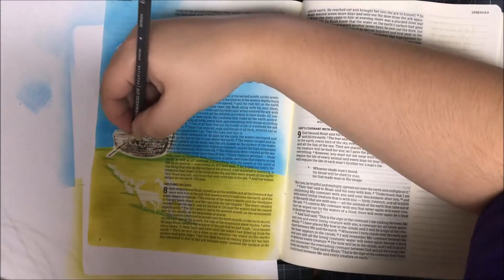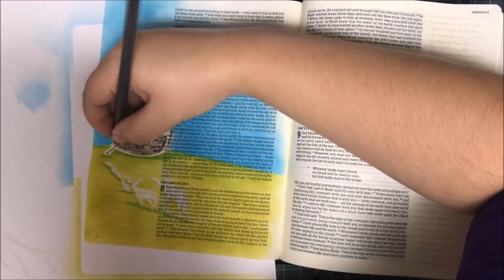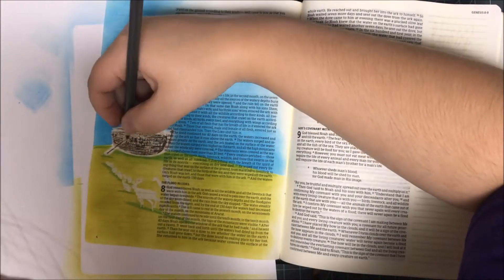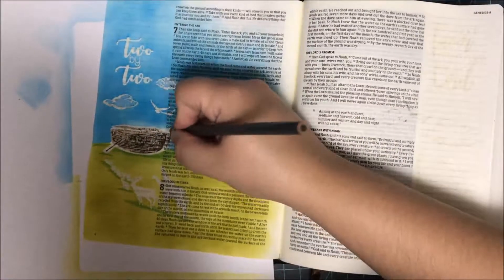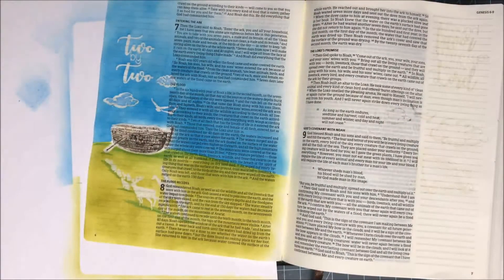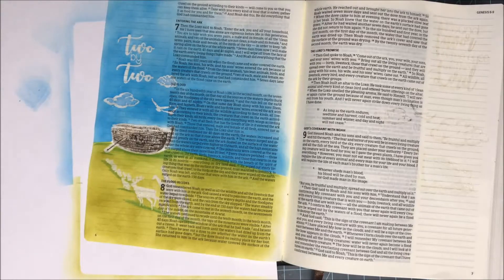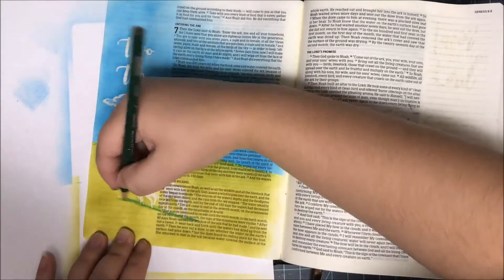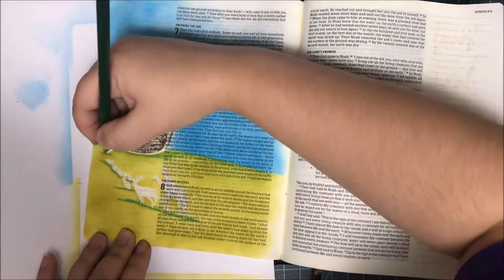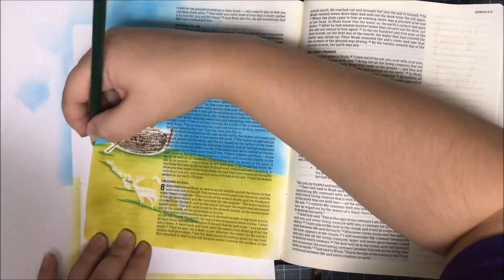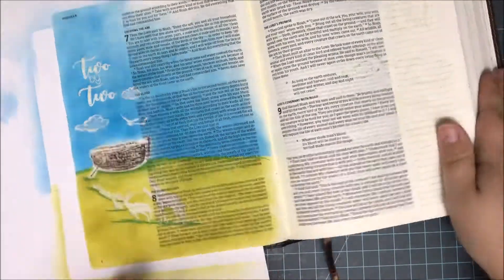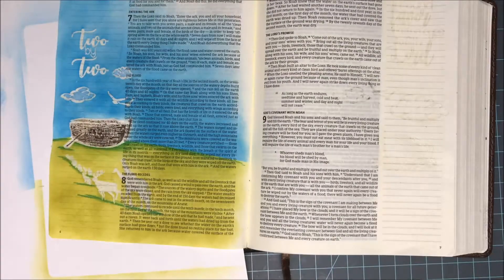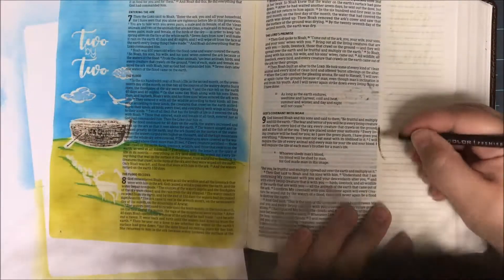But still, even with all of that on there, all of the stamping, all of the distress ink blending over the top of it, I didn't lose any of those words on the left-hand side, which was really what I was going for with this technique. I struggled to find a way to stamp this entire scene without having lost parts of the story because I still want to go back, and I still want to be able to read it. So that was my way of coming up with it.